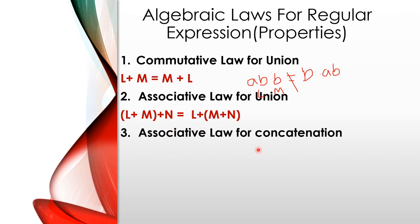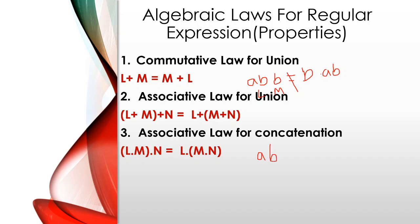Associative law for concatenation: (L into M) into N is equal to L into (M into N). For example, if L is A, M is B, and N is C, then (AB) into C gives ABC, and A into (BC) also gives ABC. This confirms that the associative law is applicable for concatenation.